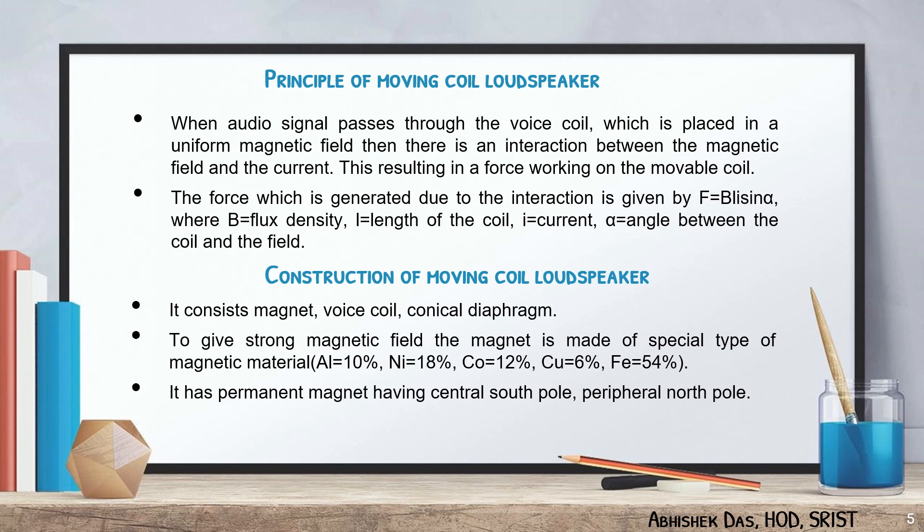Now we consider the construction of the moving coil loudspeaker. The main parts are the magnet, voice coil, and conical diaphragm. It uses a permanent magnet with a central south pole and a peripheral north pole. To give a strong magnetic field, the magnet is made of a special type of magnetic material where aluminum is 10%, nickel is 18%, cobalt is 12%, copper is 6%, and ferrous is 54%.